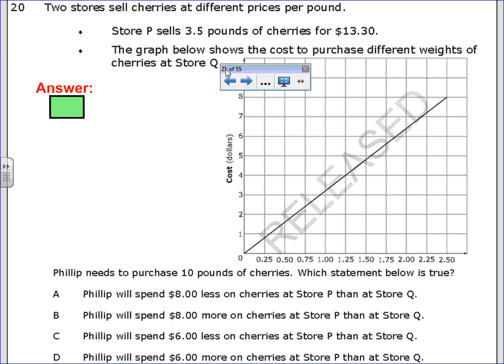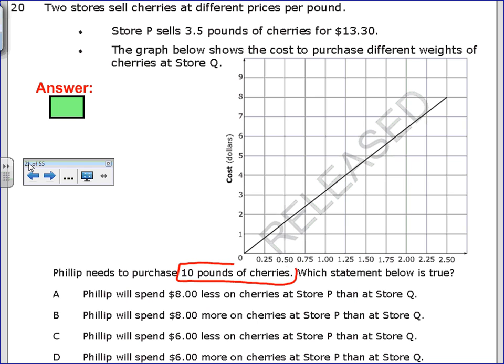And the last one for this video. Two stores sell cherries at different prices per pound. Store P sells 3.5 pounds of cherries for $13.30, and the graph below shows the cost of different weights at store Q. Philip wants to purchase 10 pounds of cherries. It says which statement is true. But the first thing I need to do is kind of organize my information.